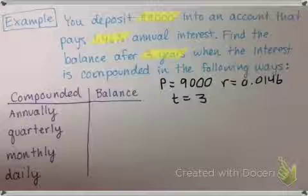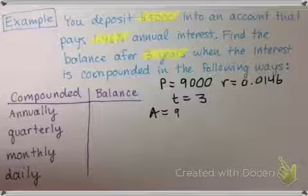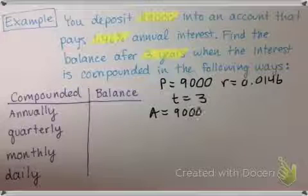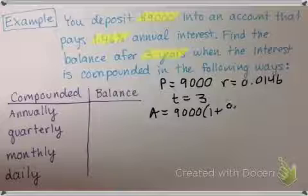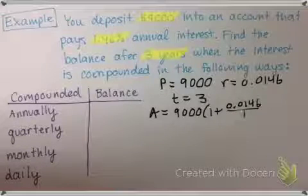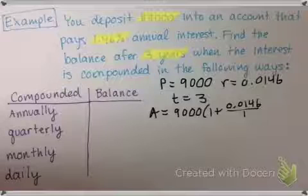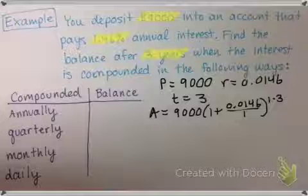So let's start with annually. So A equals 9,000 times 1 plus 0.0146 divided by 1, because I'm compounded annually one time per year, times 1 to the 1 times 3, or to the third power.